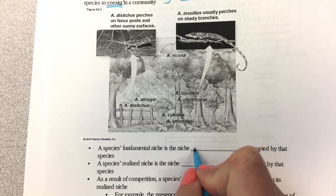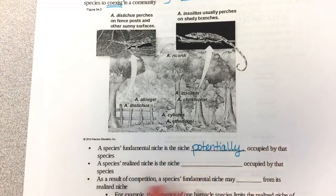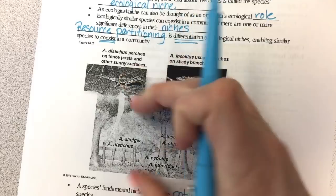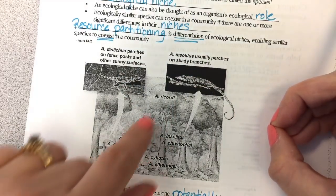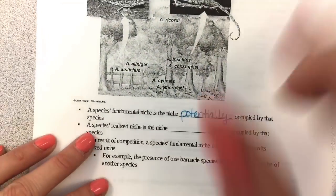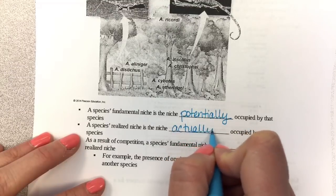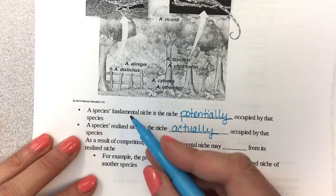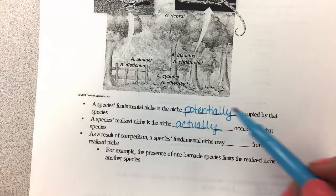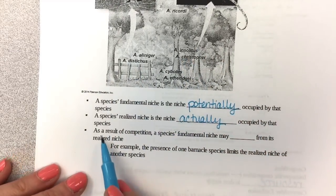A species' fundamental niche is the niche potentially occupied by that species — where it could live. For example, if we removed all the other lizards, this lizard could live up in the tree, but it doesn't because of resource partitioning. A species' realized niche is the niche it actually occupies, which is often smaller than its fundamental niche because it's sharing space with other organisms.